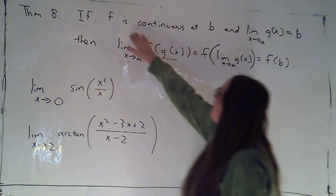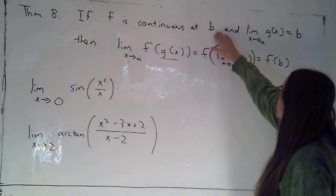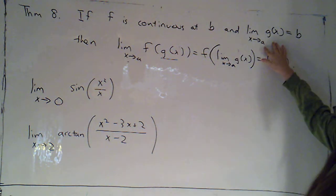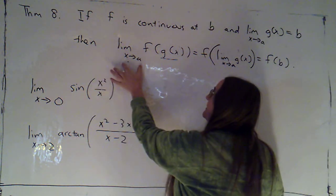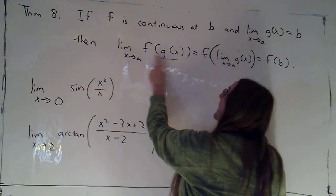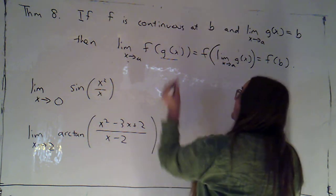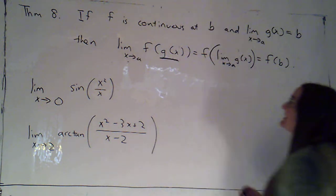So what Theorem 8 says is that if f is continuous at b, and b is going to be the limit as x approaches a of g(x). Now g(x) is going to be the inside part of a function composition. So then we're going to have the limit as x goes to a of f(g(x)). So there we do see g(x) is the inside part.